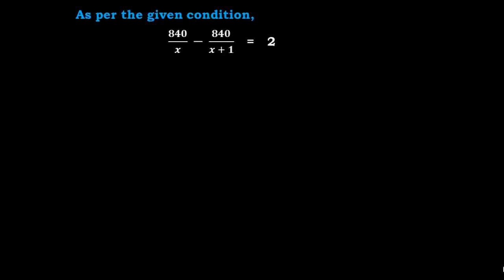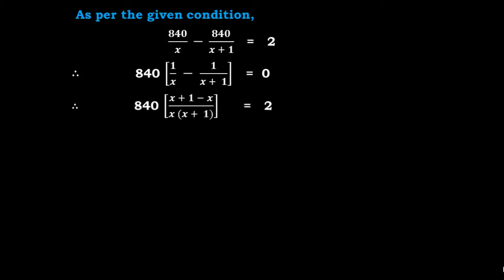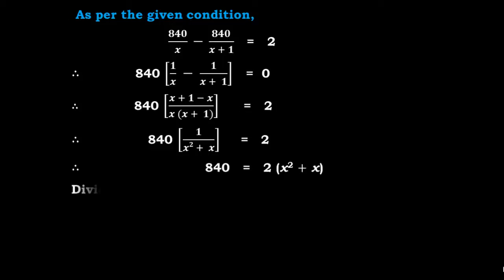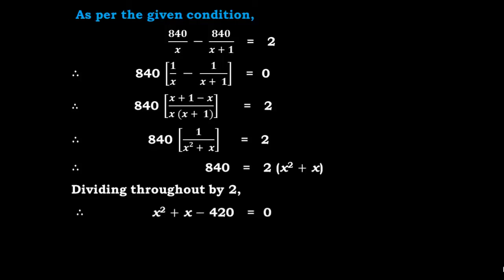Taking 840 common: 840 × [1/(X(X+1))] = 2. Solving by cross multiplication: 840 × 1 = 2 × (X² + X), so 840 = 2(X² + X). Dividing throughout by 2: 420 = X² + X. Writing in standard form: X² + X − 420 = 0.